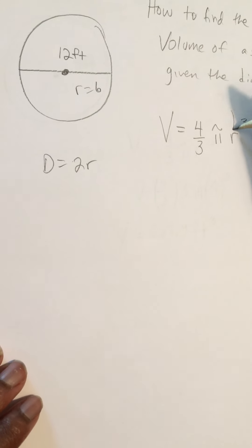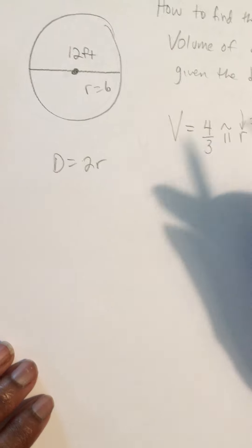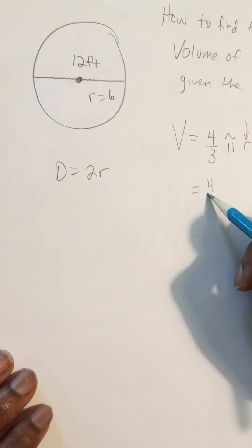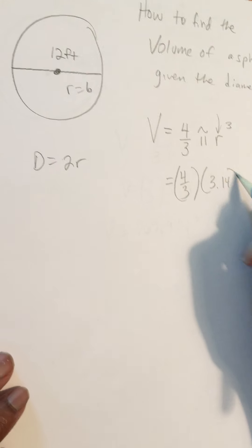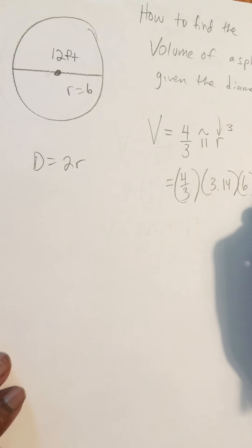So make sure you're putting the radius in this equation and not the diameter. So again, it's going to be 4 thirds times 3.14 times 6 cubed.